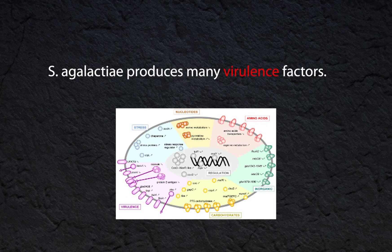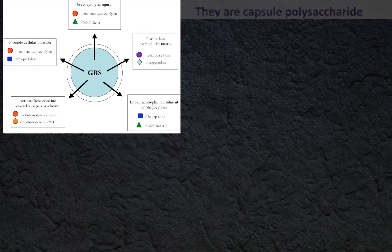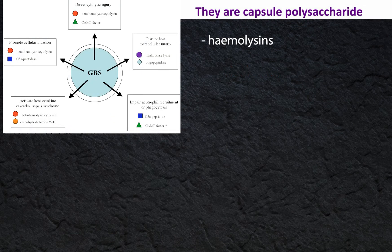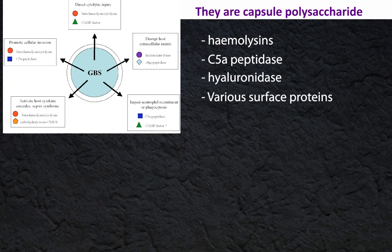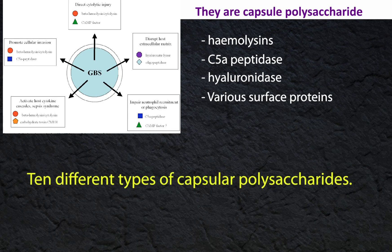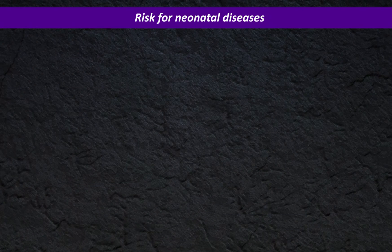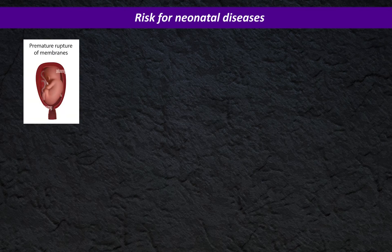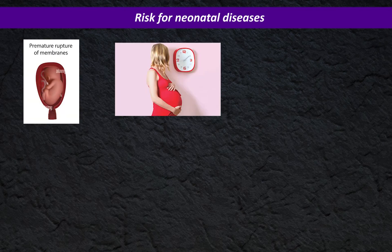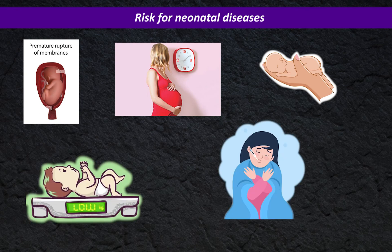S. agalactiae produces many virulence factors: capsule polysaccharide, hemolysins, C5a peptidase, hyaluronidase, and various surface proteins. There are 10 different types of capsular polysaccharides. CAMP factor is one of the known hemolysins produced by S. agalactiae. Risk factors for neonatal disease include premature rupture of membranes, prolonged labor, premature delivery, low birth weight, and intrapartum fever.